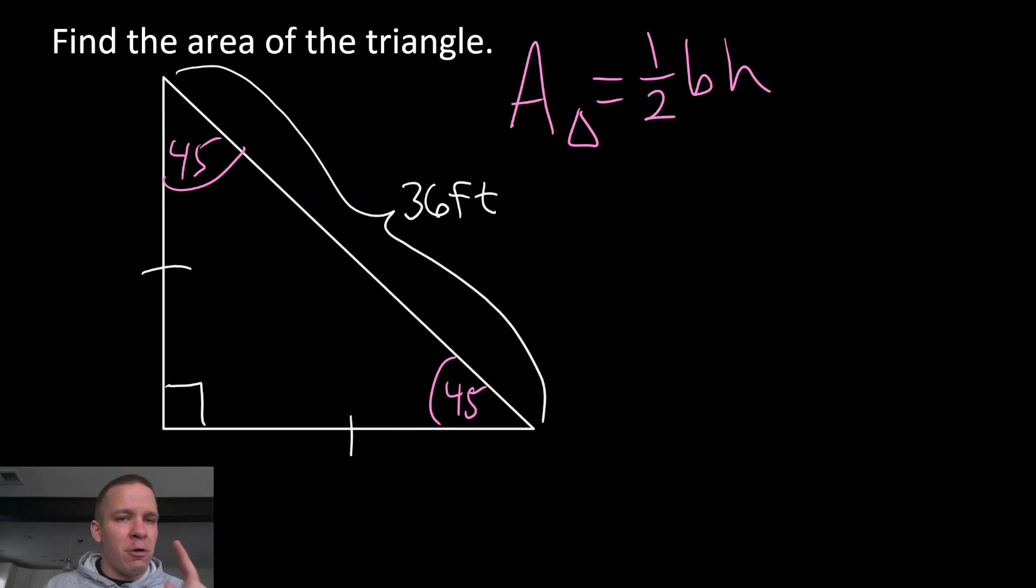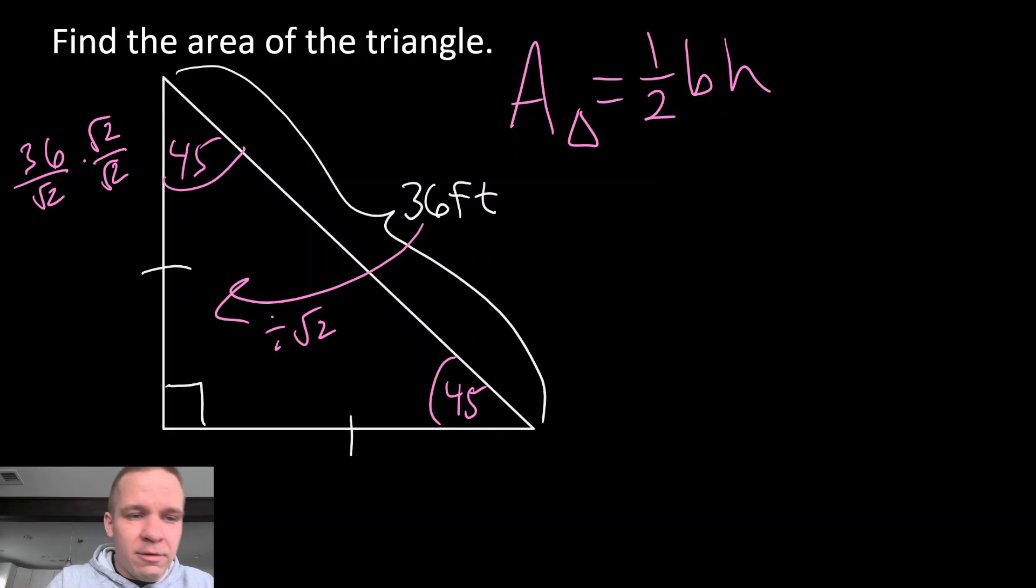So I can use my 45, 45, 90 triangle properties to find out my legs. If I divide this, divide it by root two, 36 divided by root two, rationalize it, because rationalizing, you have to do it for whatever reason. I still don't know. It would be 36 root two divided by two, so I'm gonna have 18 square root two. And if that leg is 18 root two, then this one would also be 18 root two.